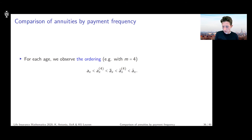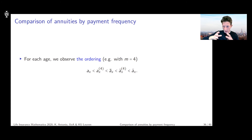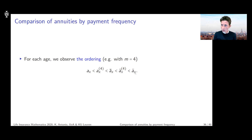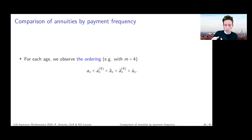The second thing is: if you pay the full amount at the beginning of the year, or continuously, versus splitting the cash flow of 1 euro into installments of 1/4, then if you die within a certain year, that affects how much of that 1 euro you receive. For example, ä_x pays the full 1 euro at the start of the year in which you die, but for the immediate annual annuity, the 1 euro is only paid at the end of the year — so in your final year of living, you receive nothing. That makes the immediate annuity cheaper than its counterpart that pays at the beginning.